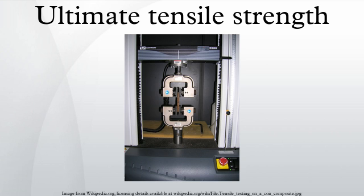The UTS is not used in the design of ductile static members because design practices dictate the use of the yield stress. It is, however, used for quality control because of the ease of testing. It is also used to roughly determine material types for unknown samples. The UTS is a common engineering parameter when designing brittle members, because there is no yield point.